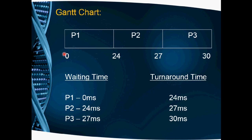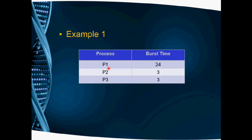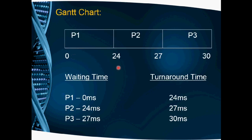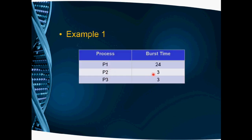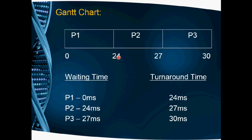Execution starts at 0 milliseconds. First, P1 executes from 0 to 24 milliseconds — its full burst time of 24 milliseconds. Once P1 finishes, the next process is P2. P2 has a burst time of 3 milliseconds, so it starts at 24 and completes at 27 milliseconds.